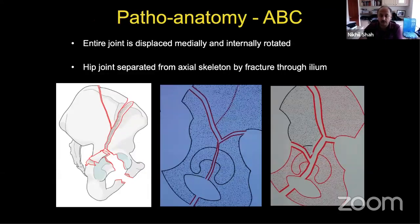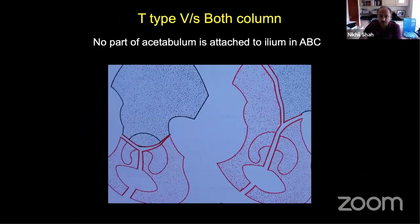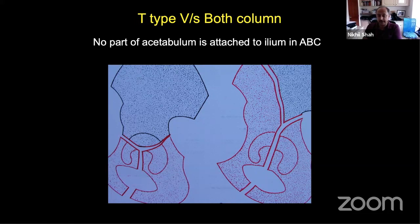When we look at the pathoanatomy, the entire joint is displaced medially and rotated internally so that no part of the acetabulum is attached to the axial skeleton. Interestingly, this often does not completely disrupt the soft tissue envelope, so using indirect concepts like ligamentotaxis you are often able to reduce the other column through a single approach. This differs from the T-type fracture, where part of the acetabulum is still attached to the ilium, making soft tissue disruption more likely.